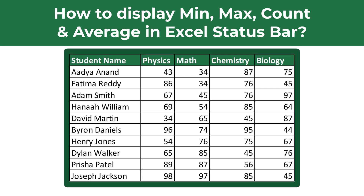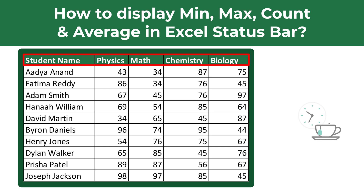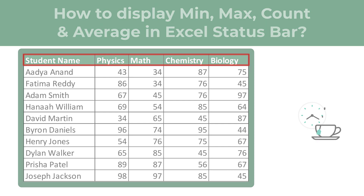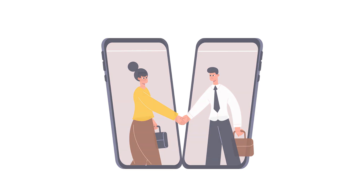For example, let's look at the question of how to display minimum, maximum, count, and average in the Excel status bar. You are presented with a data set of student grades displaying names and grades in physics, math, chemistry, and biology. Do you know how to add auto-calculations for their grades in the status bar? Give yourself a little time to come up with the solution.